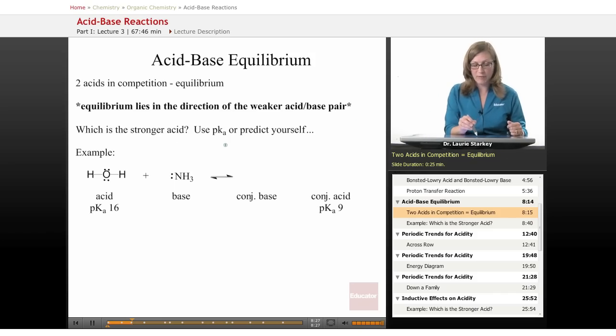If you're lucky enough to have a pKa table, you can use that. Or perhaps you can predict that yourself, and that's what we're going to be focusing on in this lesson, is looking for features that affect the acidity and make something a stronger acid or a weaker acid.